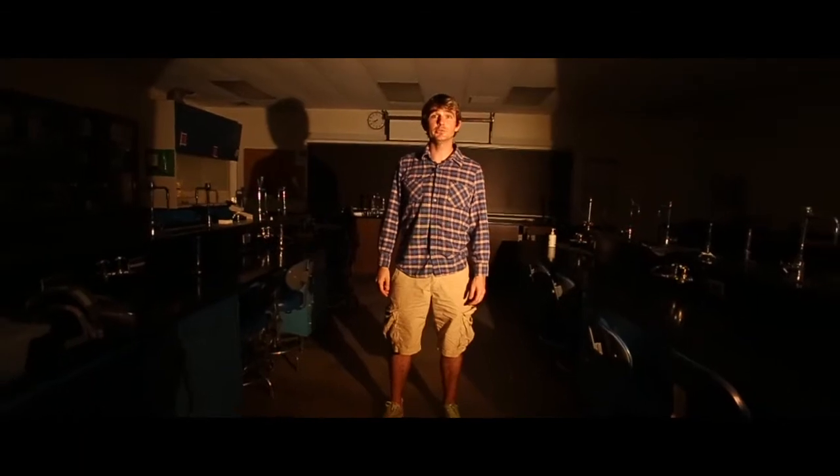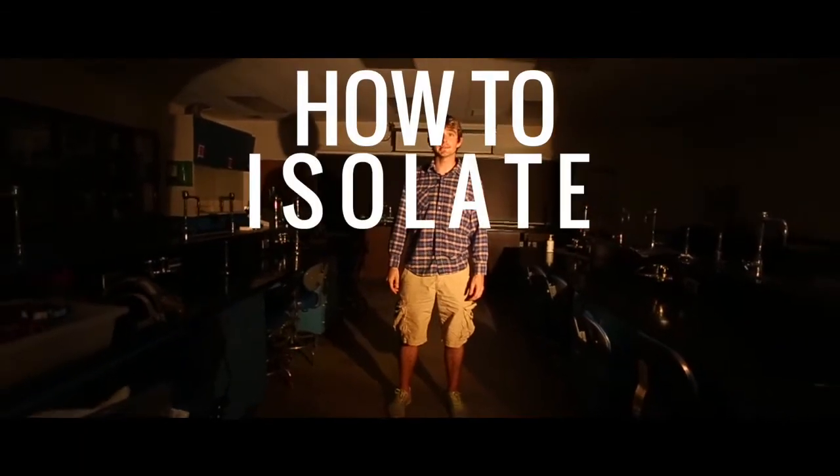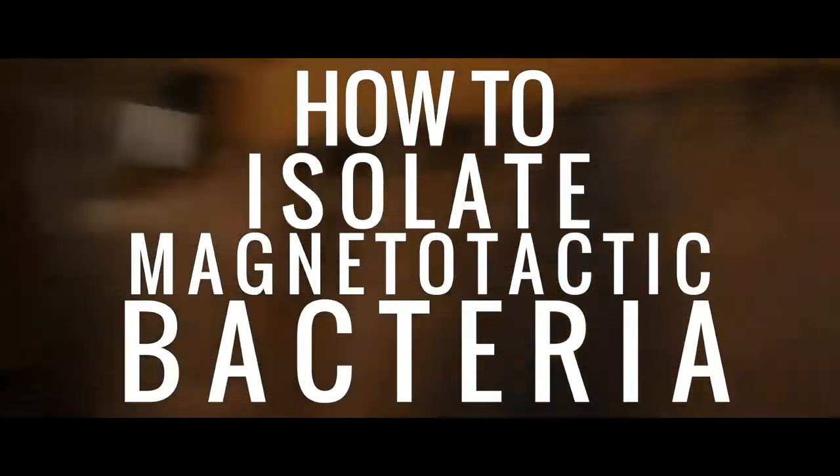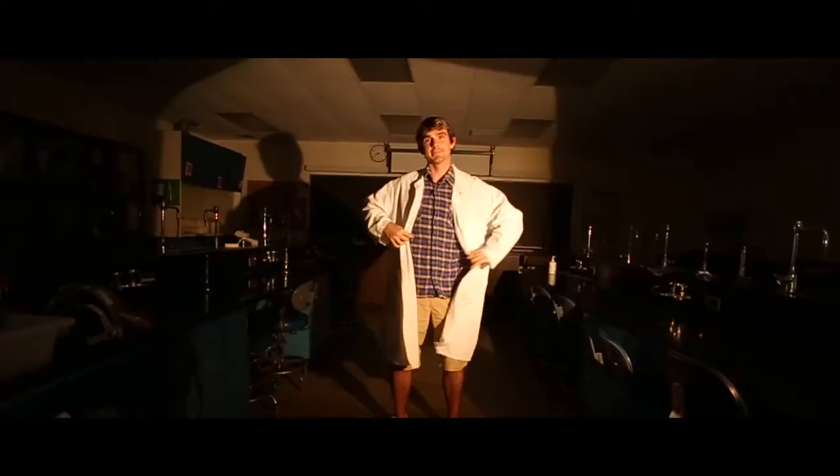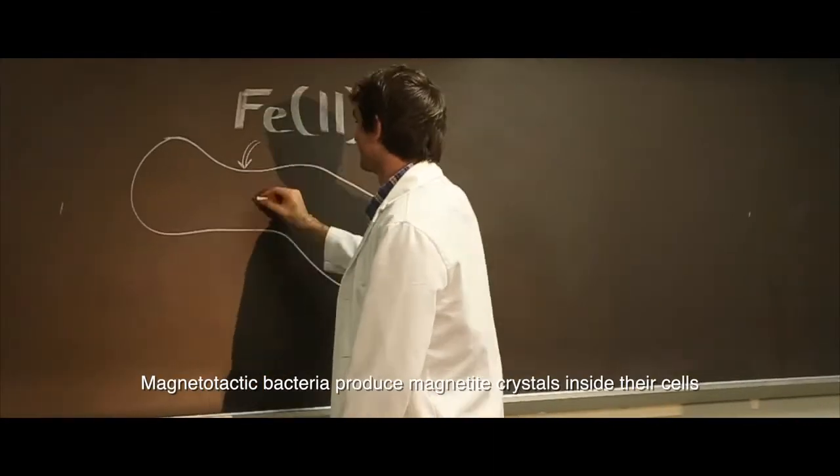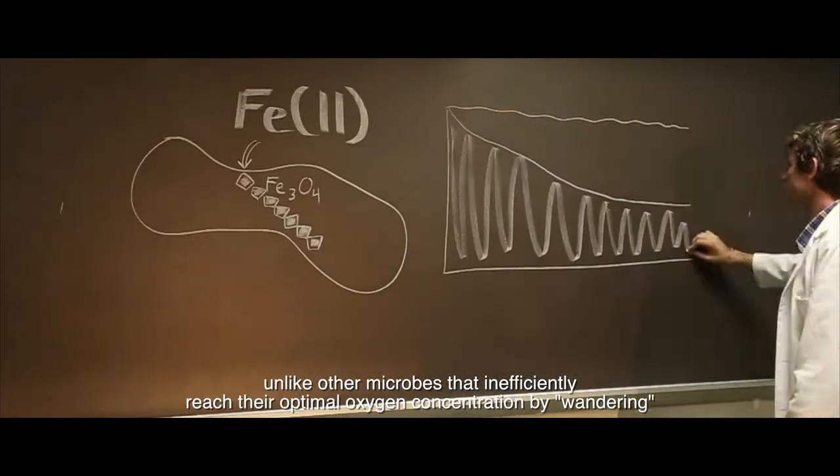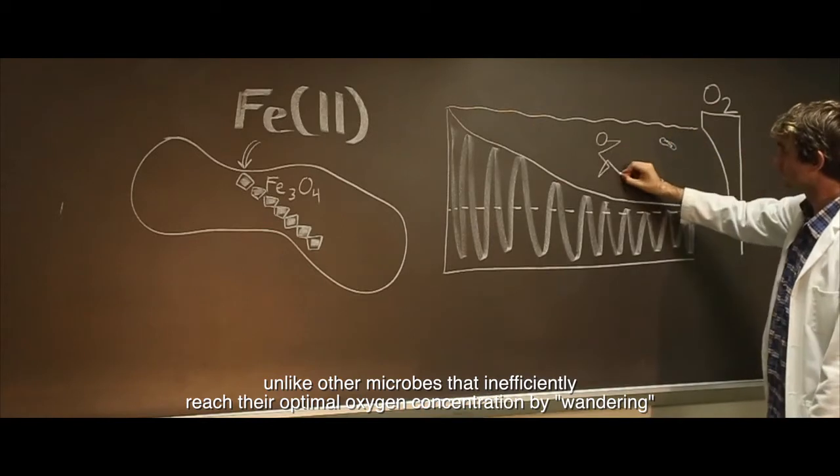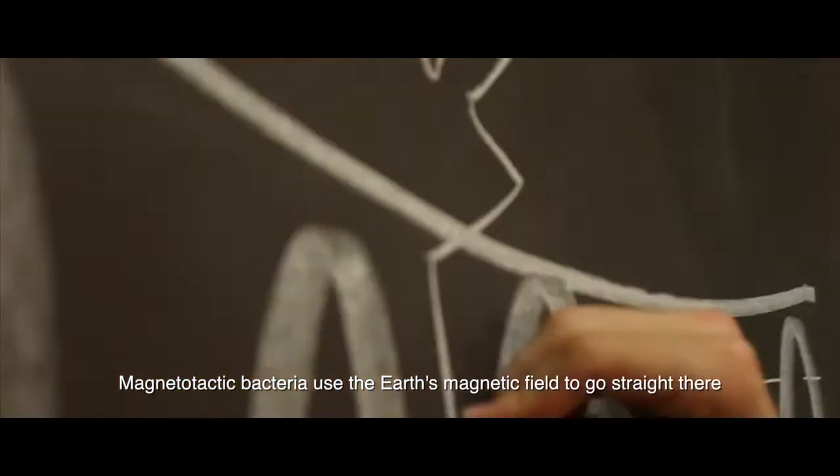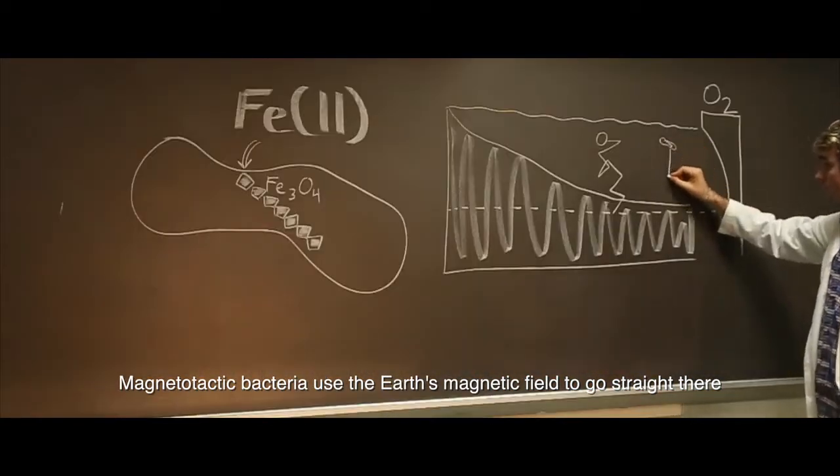Today I'll be taking you through some techniques on how to isolate magnetotactic bacteria. Magnetotactic bacteria produce magnetite crystals inside their cells. Unlike other microbes that inefficiently reach their optimal O2 concentration by wandering, magnetotactic bacteria use Earth's magnetic field to go straight there.